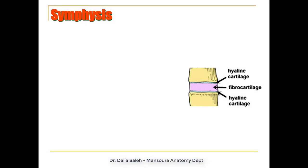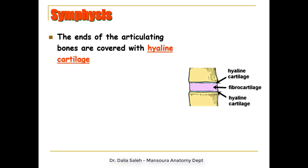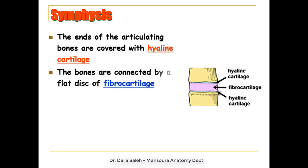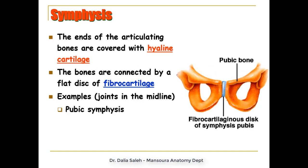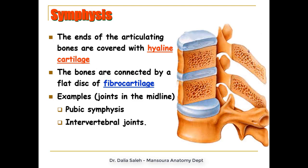In secondary cartilaginous joints, or symphysis, the ends of the articulating bones are covered with hyaline cartilage while the space or cavity of the joint is filled with a flat disc of fibrocartilage. Examples include joints lying in the midline of the body, such as the pubic symphysis between the two pubic bones, and the intervertebral joints between the bodies of the vertebrae. This type allows limited movement, and no ossification takes place, making them permanent joints.